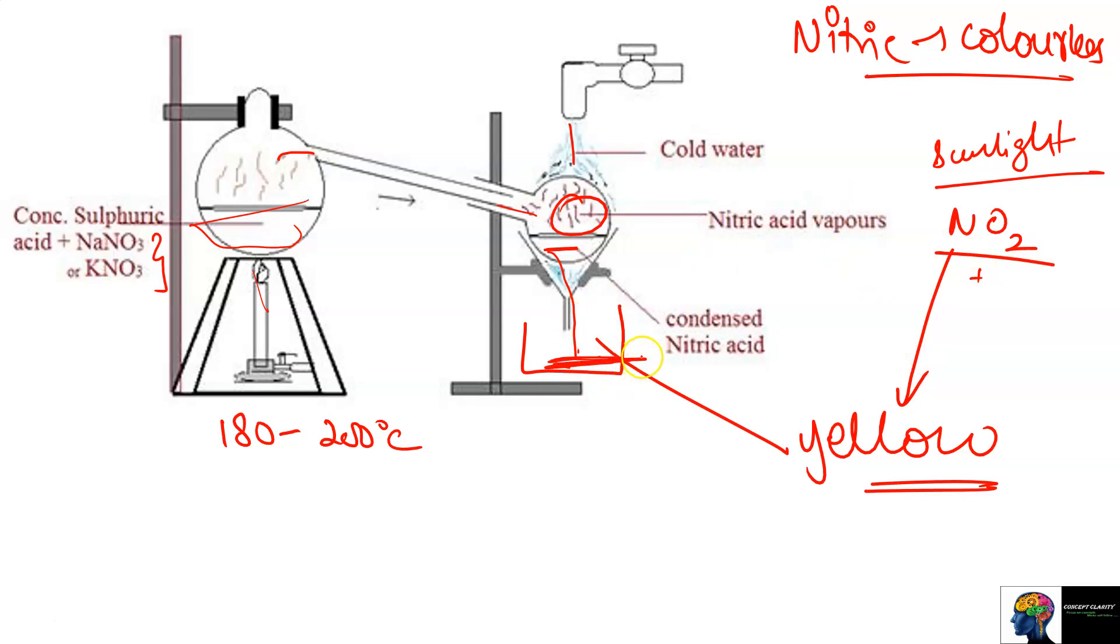This yellow color is due to the presence of nitrogen dioxide. Since we know that the pure acid is colorless, what do we need to do? The nitrogen dioxide gas that has been produced, we need to do something. Now what do we need to do? To remove the yellow color.